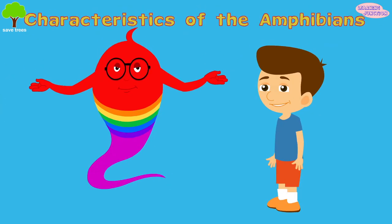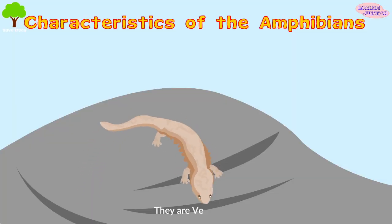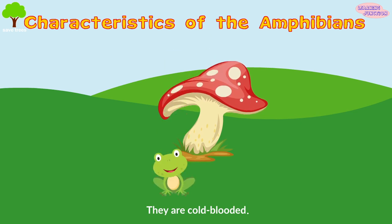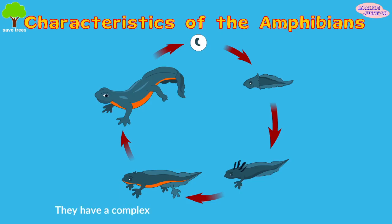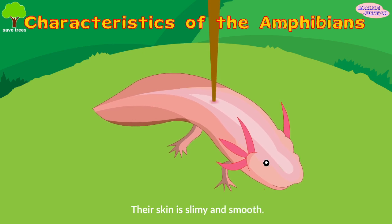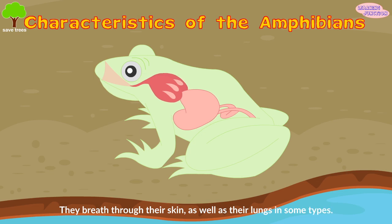Let's see the characteristics of amphibians. They are vertebrates. They're cold-blooded, meaning they must cool off and warm up by using their surroundings. They have a complex life cycle, including larvae and adult stages. Their skin is slimy and smooth. They breathe through their skin as well as their lungs in some types.